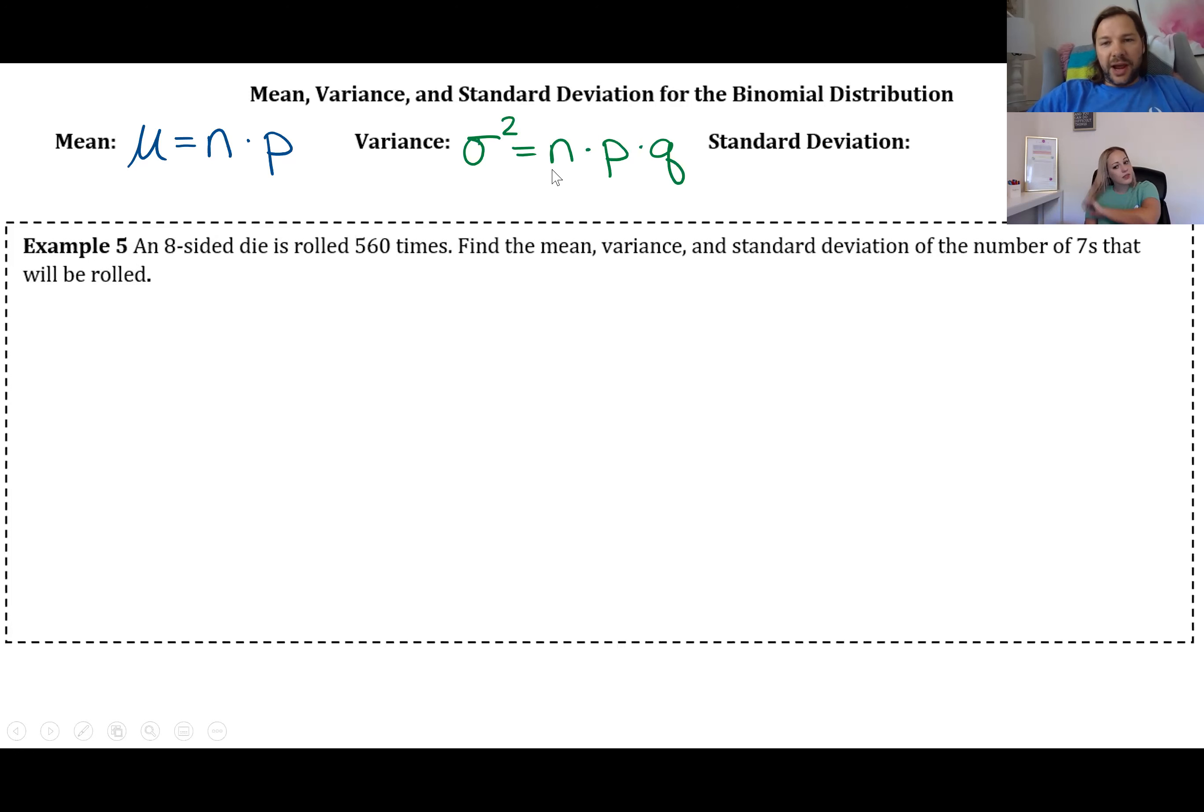And n is the number of trials. And then finally standard deviation is again just the square root of your variance, so it's the square root of n times p times q.